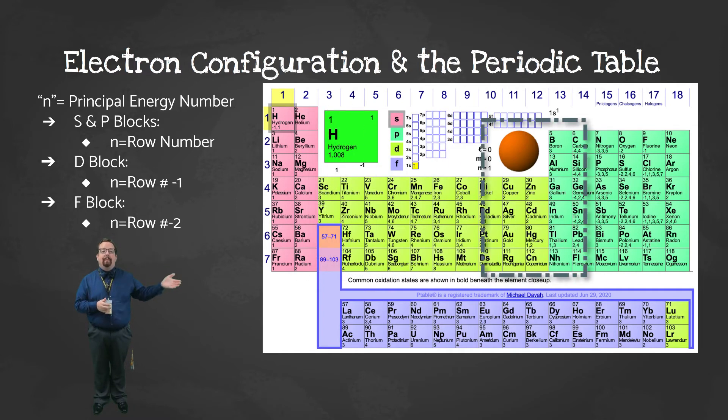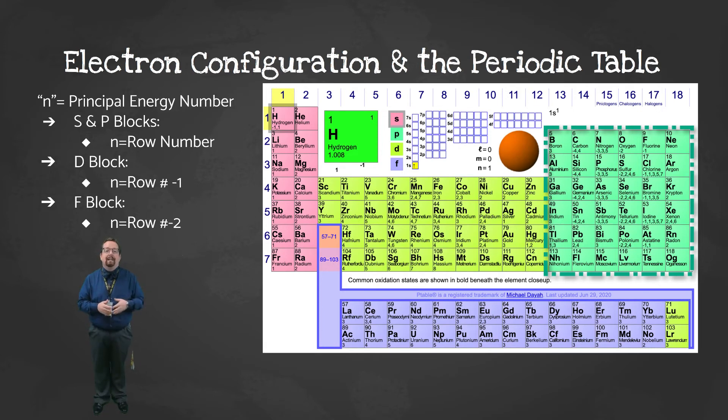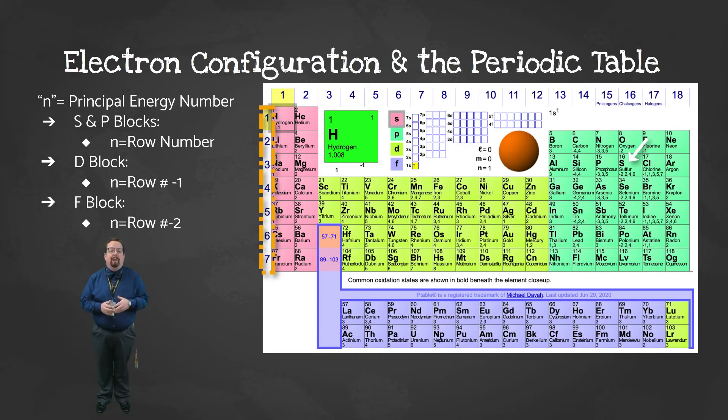From there, we can jump over to the P block, which is the aqua colored section, clear over to the right. Starting with the boron column, our electron configurations here would end in P1, P2, P3, etc. The important thing to note here is that for the S and P blocks, the principal energy level for the valence electrons is the same as whatever row that element is in. So for sulfur, its electron configuration will end in 3P4. 3 because it's in row 3, and P4 because it's in the fourth column in the P block.